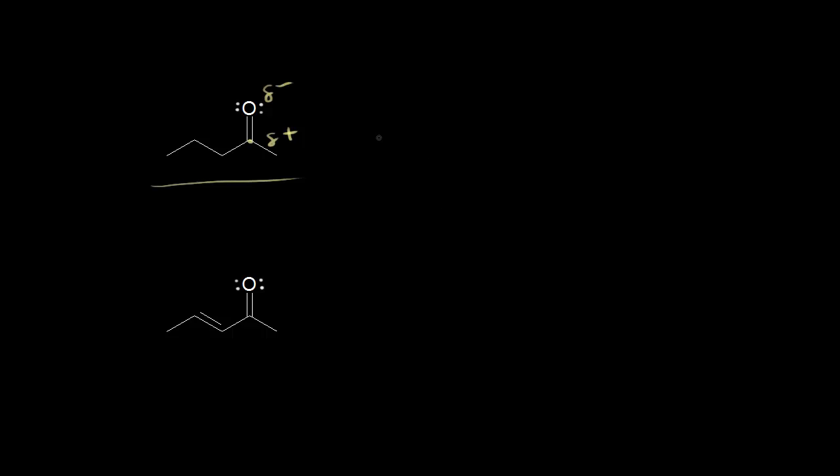If you look at the dot structure for a ketone, we already know we're going to see a signal for the ketone carbonyl on our IR spectrum because the oxygen is partially negative and this carbon is partially positive. A relatively large separation of charge means a relatively large change in the dipole moment of the carbonyl when it stretches, so we get a very strong signal. The signal for the ketone carbonyl shows up at a wave number of approximately 1715 or 1720.